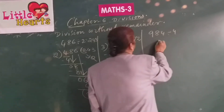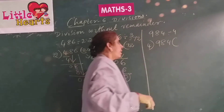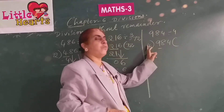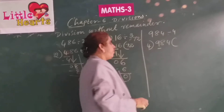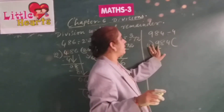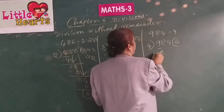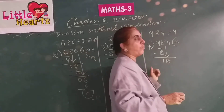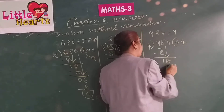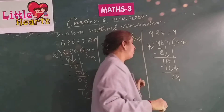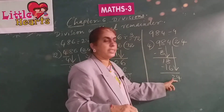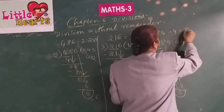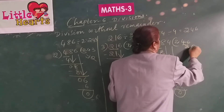Consider 984 divided by 4. As 9 is greater than 4, take only 1 digit: 9. Read 4 table: 4 twos are 8; 9 minus 8 is 1. Bring down 8 to get 18. Divide 18 by 4: 4 fours are 16; 18 minus 16 is 2. Bring down 4 to get 24. Read 4 table: 4 sixes are 24; 24 minus 24 is 0. So 246 is the quotient and the remainder is 0.